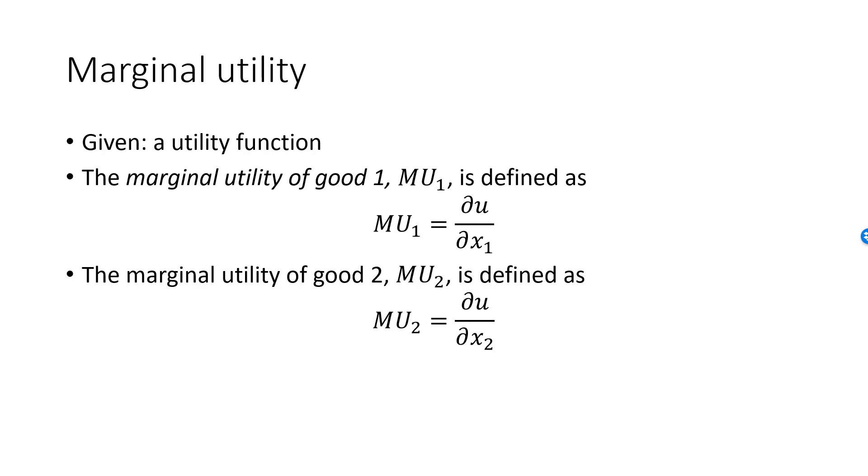Keep in mind that utility functions are assumed to be ordinal, and that a particular utility value has no interpretation. This means that changes in utility levels will have no interpretation either, making marginal utility values uninterpretable as well. Knowing the marginal utilities for a consumer at a given consumption bundle will really tell you nothing.